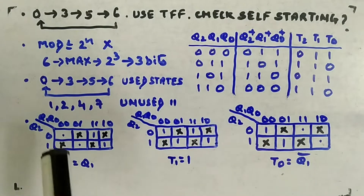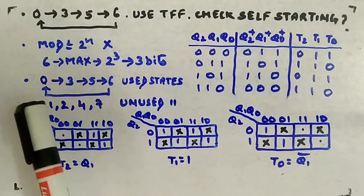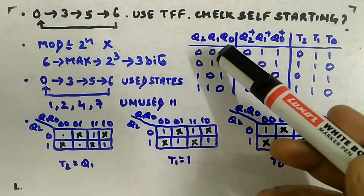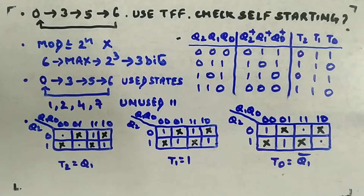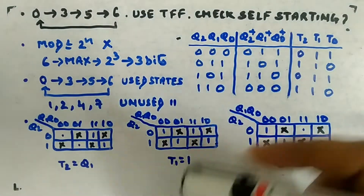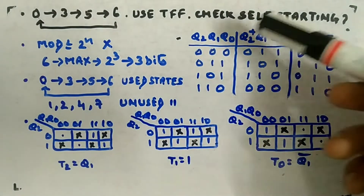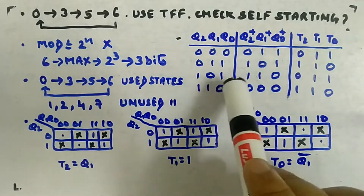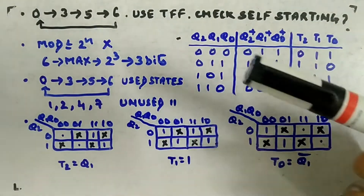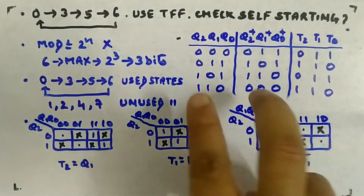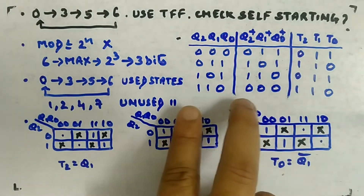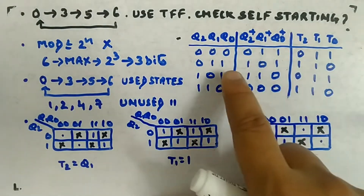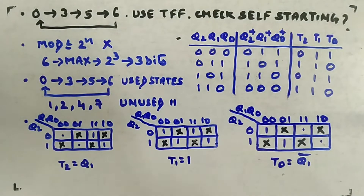With three flip-flops, the transition diagram is 0→3→5→6→0. The used states are 0, 3, 5, 6 and unused states are 1, 2, 4, 7. The excitation table has columns Q2, Q1, Q0 and their next states Q2+, Q1+, Q0+, then the T flip-flop inputs. For T flip-flop: same bits give input 0, different bits give input 1.